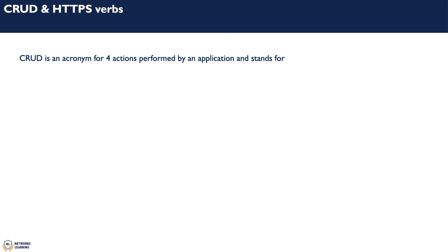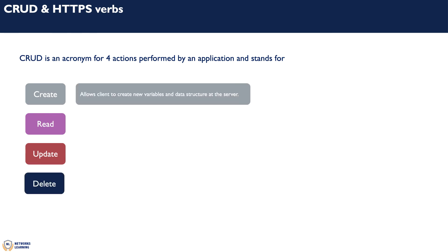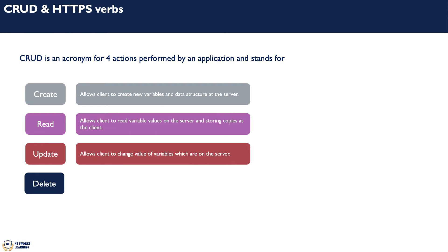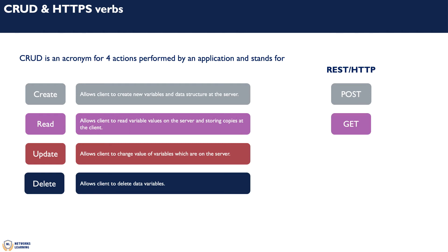Applications perform four primary functions as defined by the software industry: CRUD. CRUD stands for Create, Read, Update, and Delete. Create allows a client to create new variables and data structures at the server. Read allows a client to read variable values on the server and store copies at the client. Update allows clients to change the values of these variables on the server, and Delete allows clients to delete data variables. When mapping these actions to REST or HTTP, we use POST, GET, PATCH or PUT, and DELETE.